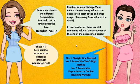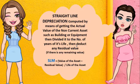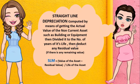Straight Line Depreciation is computed by getting the actual value of a non-current asset such as building or equipment, then divided by the number of years of its useful life, then deduct any residual value if there is any remaining value. The formula is: SLM equals the value of the asset minus residual value, divided by the life of the asset.